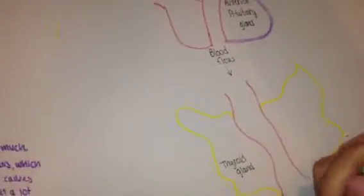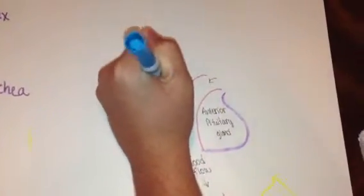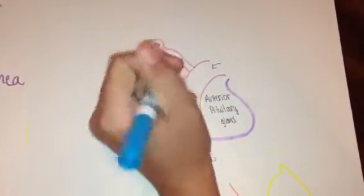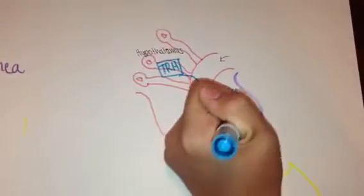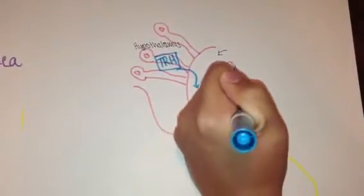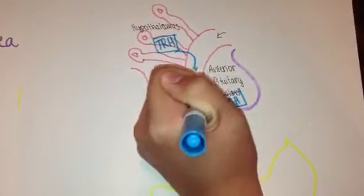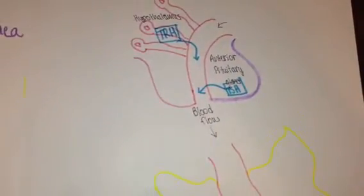The hypothalamus secretes TRH or thyrotropin releasing hormone. This stimulates the secretion of TSH or thyroid stimulating hormone by the pituitary gland. Finally, the thyroid hormones are secreted by the thyroid gland.